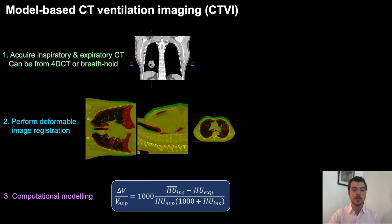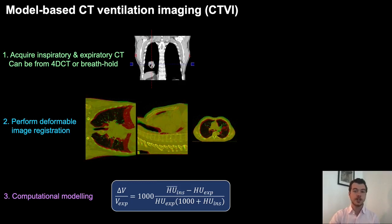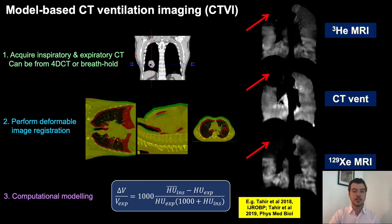CT ventilation imaging, or CTVI, aims to derive images of regional lung ventilation from multi-inflation CT acquired without contrast or specialised equipment. These CT ventilation surrogate images are derived using an inspiratory and an expiratory CT image acquired during tidal breathing or breath hold. Deformable image registration is then conducted to ensure that both inflation levels are in the same spatial domain. We then apply a computational model to derive the surrogate ventilation images.